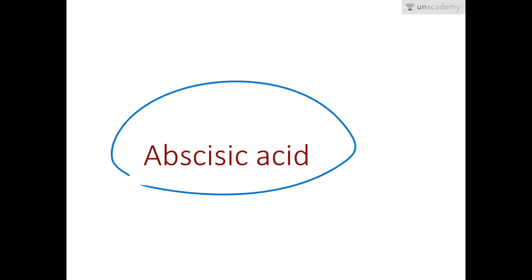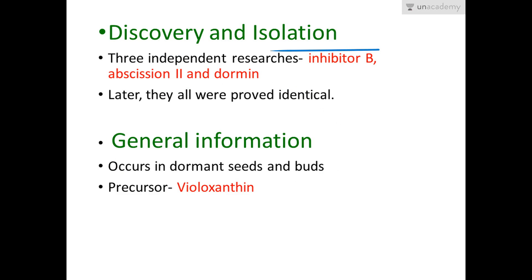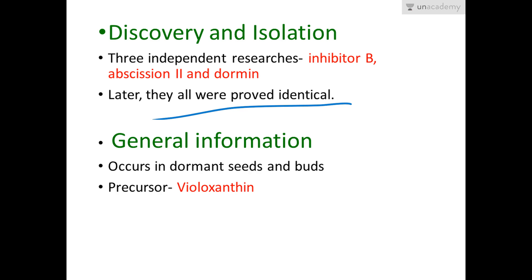Next we will discuss abscisic acid. In the mid-1960s, three independent researches were carried out and three substances were reported with almost the same chemical composition. The three names given were inhibitor B, abscissin 2, and dormin. They were later all proved identical because they had similar functions on the plant and similar chemical composition.